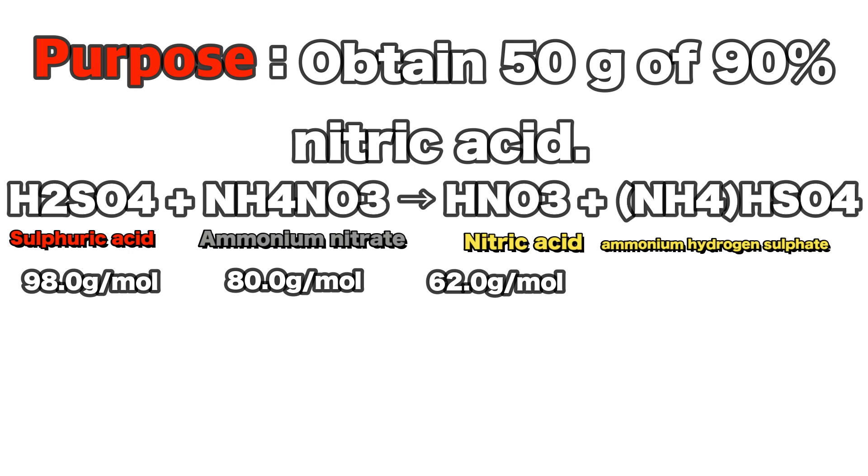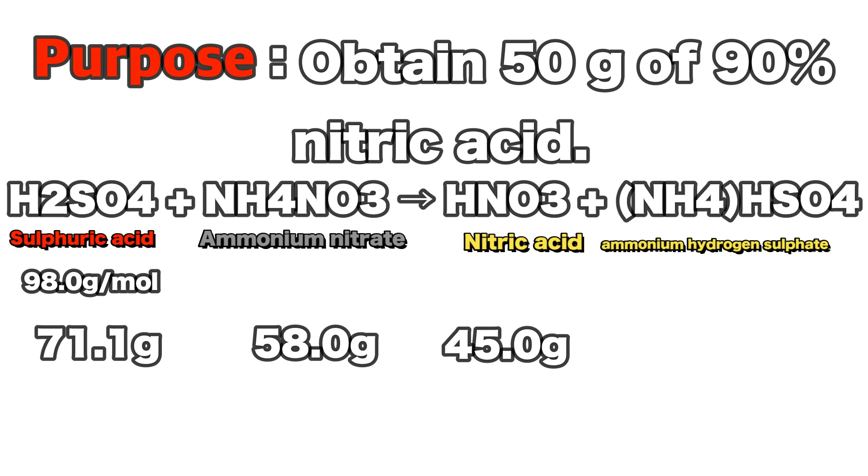In order to obtain 45 grams of nitric acid, I have to prepare 71.1 grams of sulfuric acid and 58.0 grams of ammonium nitrate.